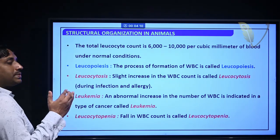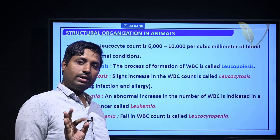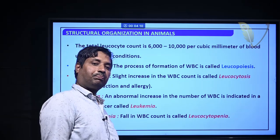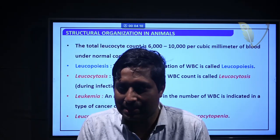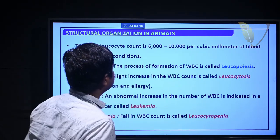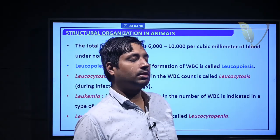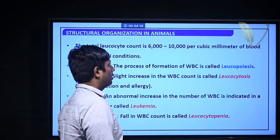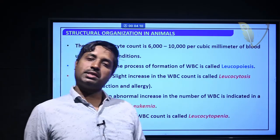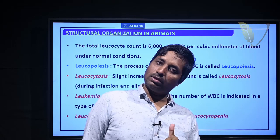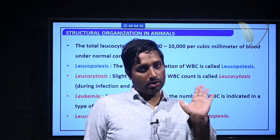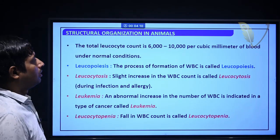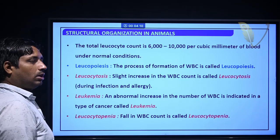The total leukocyte count — leukocyte meaning white blood cell — is measured per cubic millimeter of blood. The normal count ranges between 6,000 and 8,000 per cubic millimeter of blood under normal conditions.